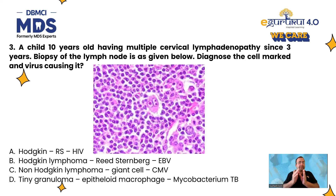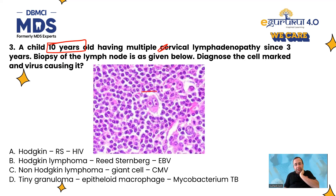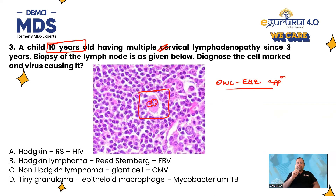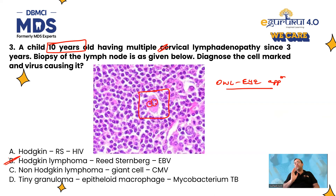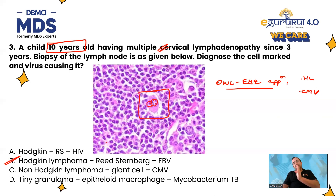Next question — the image itself is beautiful. A 10-year-old child with multiple cervical lymphadenopathies for the past 3 years, and a lymph node biopsy is given. You can see a binucleate cell with 2 nuclei with prominent nucleoli giving it an owl-eye appearance. This is associated with two diseases: Hodgkin's lymphoma — this is the classical Reed-Sternberg cell — and also CMV pneumonia. This was a case of classical Hodgkin's lymphoma, which is associated with Epstein-Barr virus.